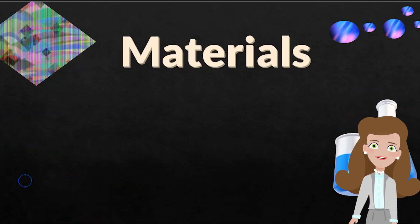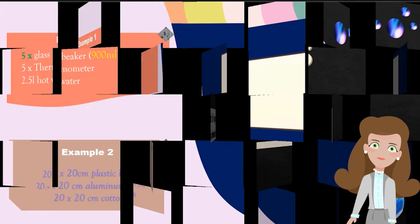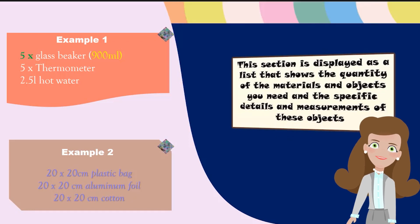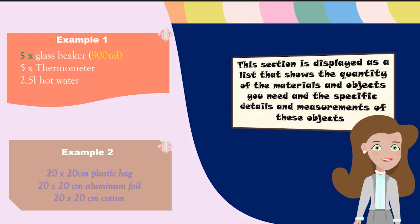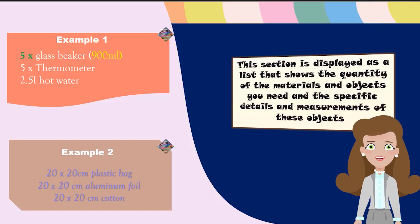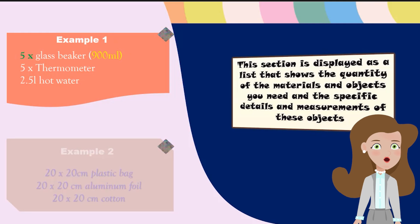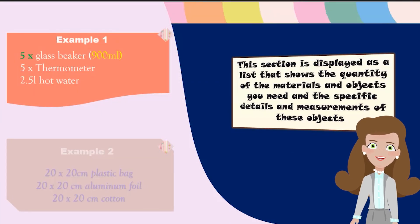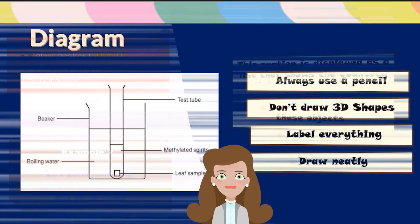Materials, which is the list of equipment and chemicals. This section is displayed as a list that shows the quantity of the materials and objects you need and the specific details and measurements of these objects. For example, an experiment might need 5 glass beakers, 5 thermometers, and 2.5 liters of hot water. This section includes all the list of chemicals and materials and equipment that you might need for your experiment.